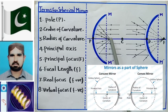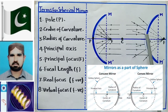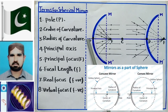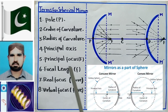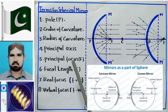चौथी definition है principal axis। एक straight line आप देख रहे हैं जो pole से चलती है, center से होके गुज़रती है, फिर दूसरे mirror के pole से और फिर center की तरफ जाती है। Straight line passing through the pole and center of curvature is called principal axis।